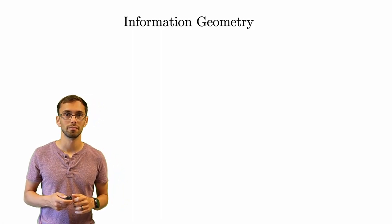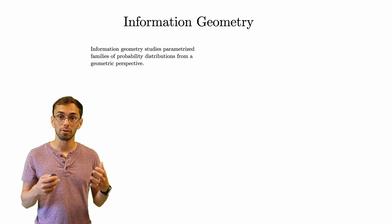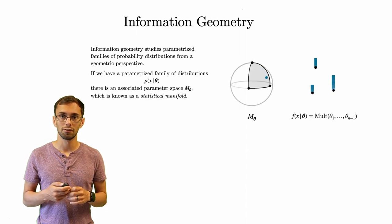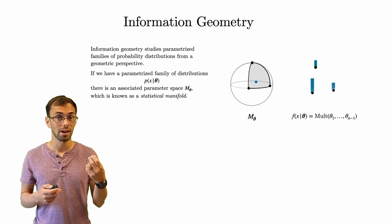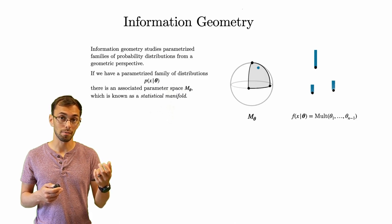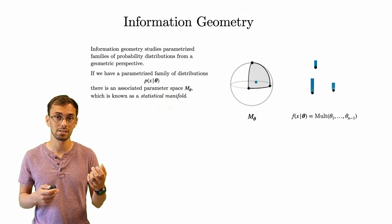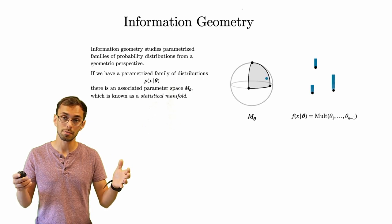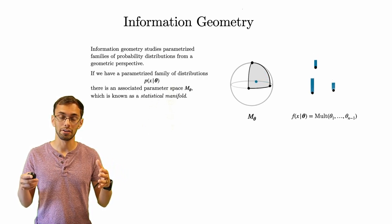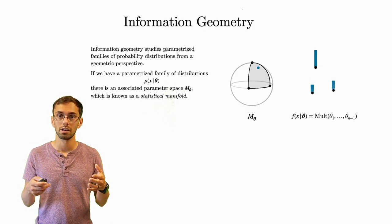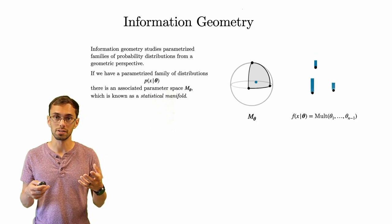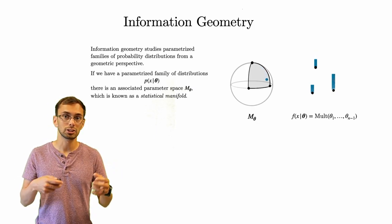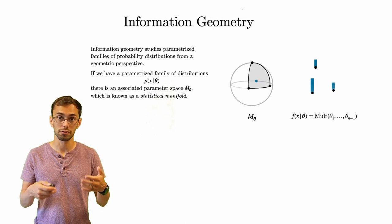Let's give some background on information geometry. Information geometry studies parametrized families of probability distributions from a geometric perspective. If we have a parametrized family p of x given theta, where x is a point in the sample space, p is a probability density or probability mass, and theta is a parameter, we consider the space of all possible theta values. The collection of those forms a statistical manifold. Here what I've pictured are multinomial distributions — there are three events, each with a different probability of occurring, and by changing the probabilities we get a different multinomial distribution.